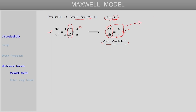This kind of prediction is actually a poor prediction for the creep behavior of actual polymeric materials. The Maxwell model predicts epsilon increasing linearly with time, whereas in actual creep experiments on viscoelastic polymeric materials, epsilon increases with time but the rate of increase actually reduces with time. Initially the rate at which epsilon increases is high and later on it goes down. So the Maxwell model is not a very good model for predicting creep behavior.